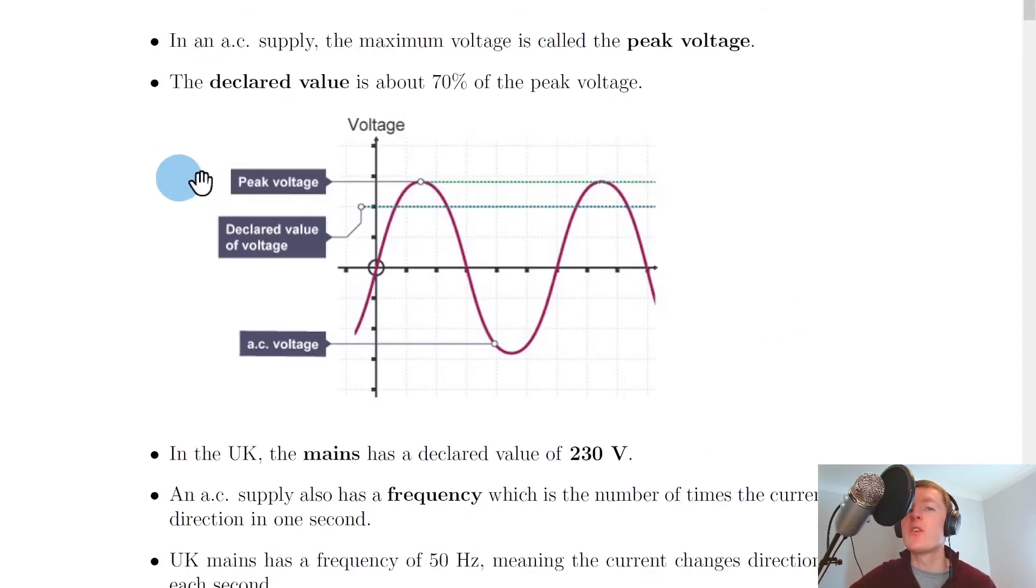For the wave pattern of the AC signal, we can label some new terms. In an AC supply, the maximum voltage is called the peak voltage. So if we look at a picture of that wave pattern again, this top point of the wave we call the peak voltage.